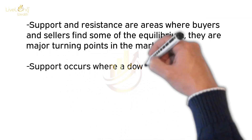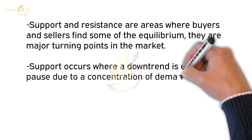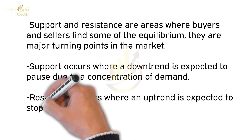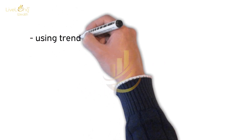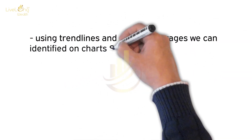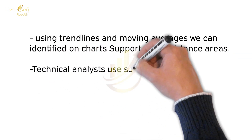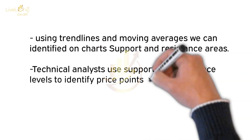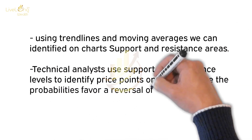Support occurs where a downtrend is expected to pause due to a concentration of demand. Resistance occurs where an uptrend is expected to stop temporarily due to a concentration of supply. Using trend lines and moving averages, we can identify support and resistance areas on a chart. Technical analysts use support and resistance levels to identify price points where the probabilities favor a reversal of a prevailing trend.